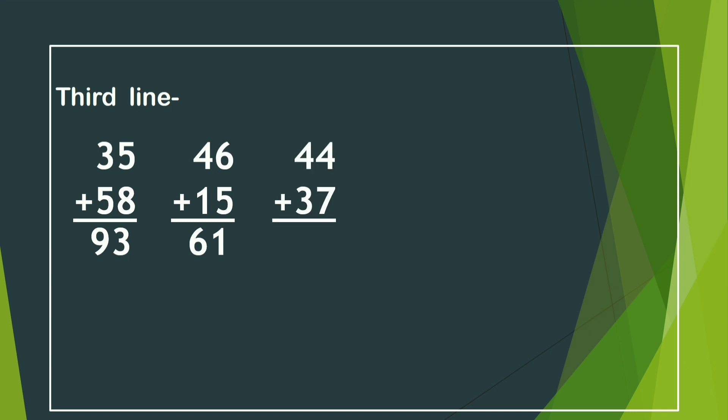Next, 44 and 37. We count after 7 up to 4, which gives 11. We write only 1 below the 7, and the other 1 is added with left side 4: 4 and 1 is 5, and 5 and 3 is 8. So our answer is 81. Next, 32 and 59.